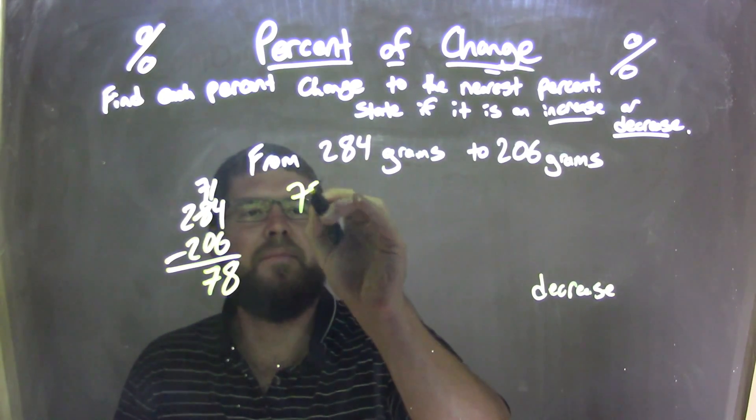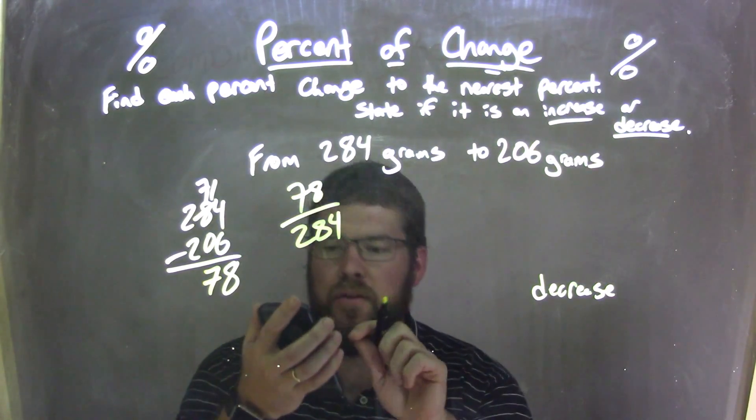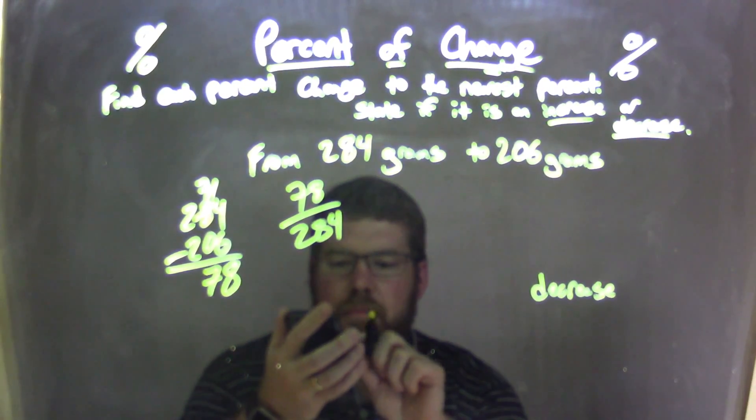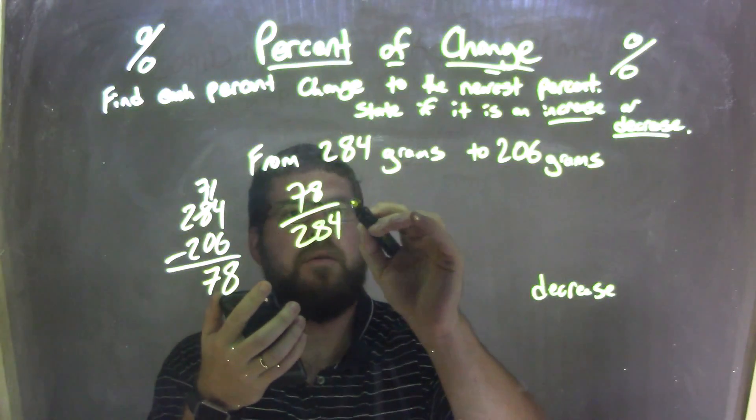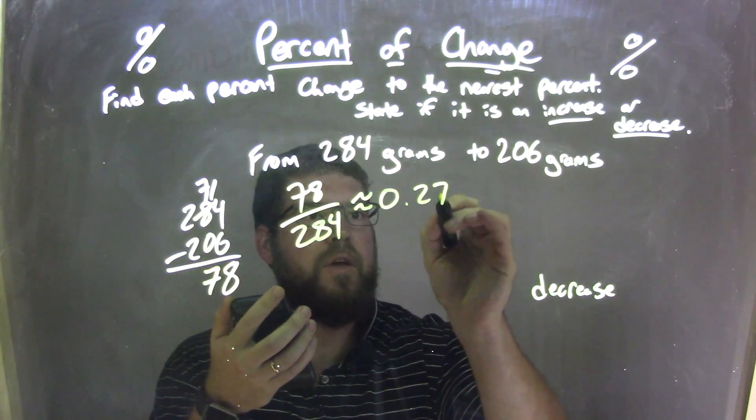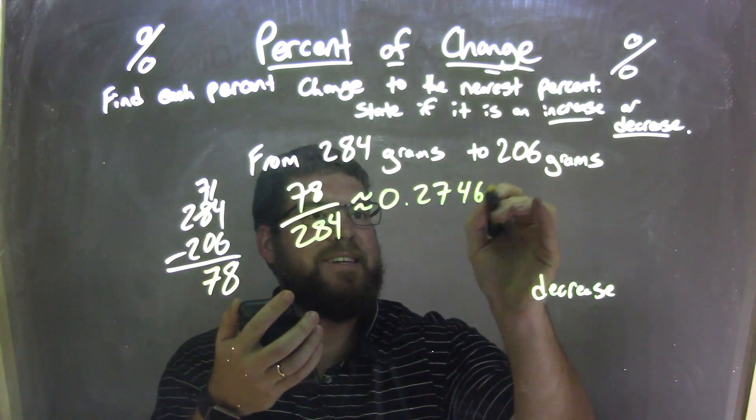We take that 78, and we divide it by 284, the first number. Well, 78 divided by 284 comes out to be approximately 0.27465.